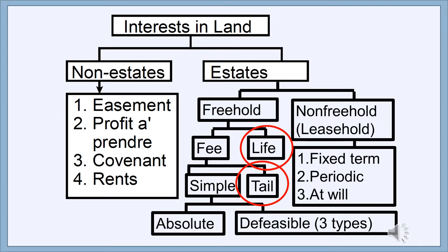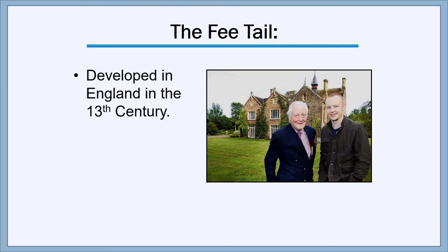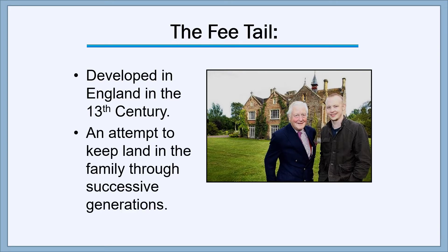The fee can either be a fee simple, which we've already covered, or a fee tail. A freehold estate can either be a fee estate, which we'll have fully covered when we cover fee tails here, or it can be a life estate. So that's the picture into which the life estate and the fee tail are going to fit. The fee tail was developed in England in the 13th century and was a result of the fact that many Norman barons had been given huge estates in England by William I as rewards for their helping him with the Norman Conquest.